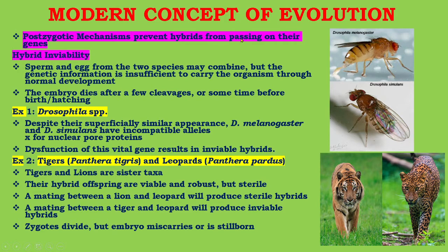Post-zygotic mechanisms prevent hybrids from passing on their genes. First is hybrid inviability: some eggs from two species may combine, but the genetic information is insufficient to carry the organism through normal development, and the embryo dies after a few cleavages or before birth or hatching. For example, Drosophila melanogaster and Drosophila simulans have incompatible alleles for nuclear pore proteins, and dysfunction of this vital gene results in inviable hybrids. Another example: a mating between lion and leopard will produce sterile hybrids; a mating between tiger and leopard will produce inviable hybrids where embryos miscarry or are stillborn.